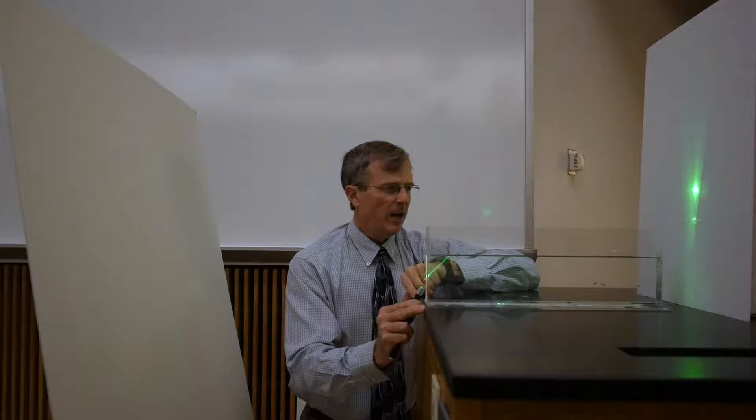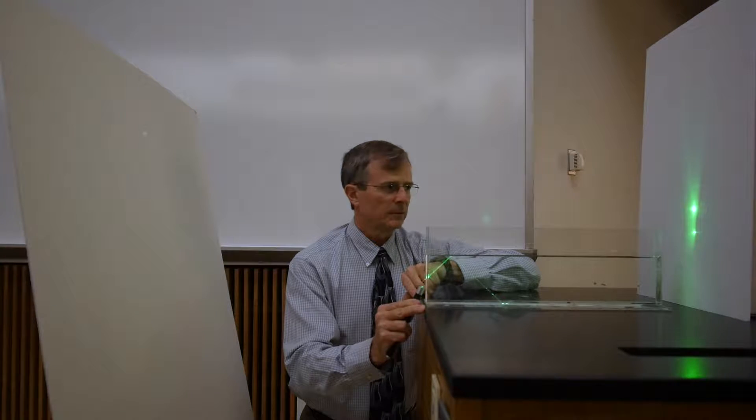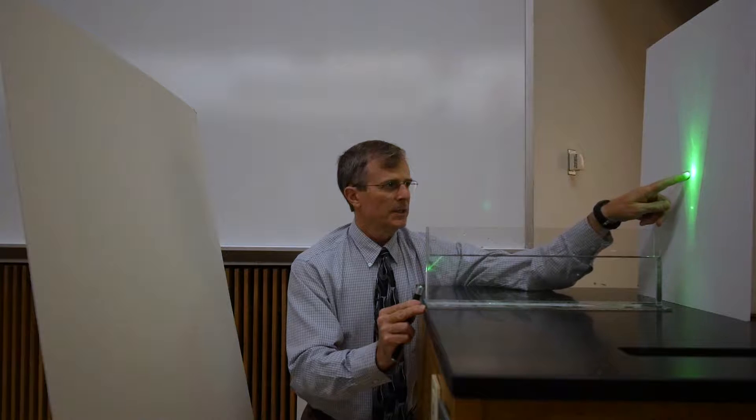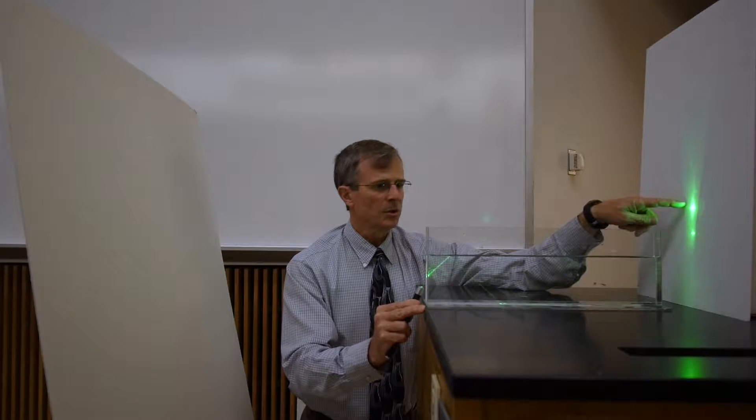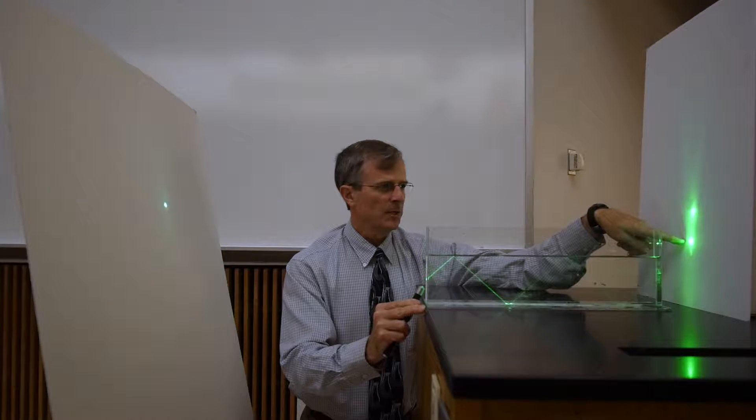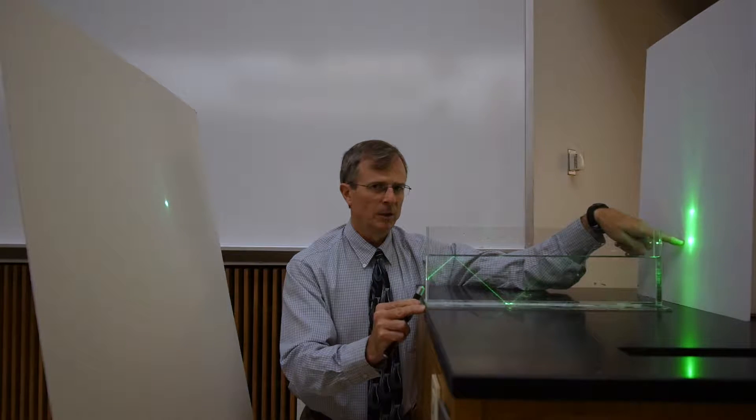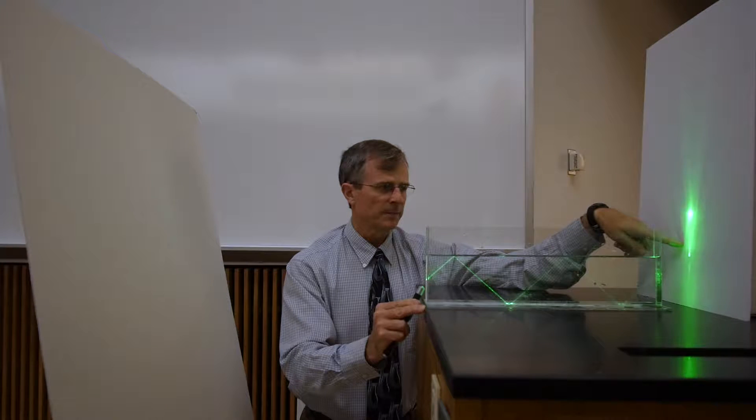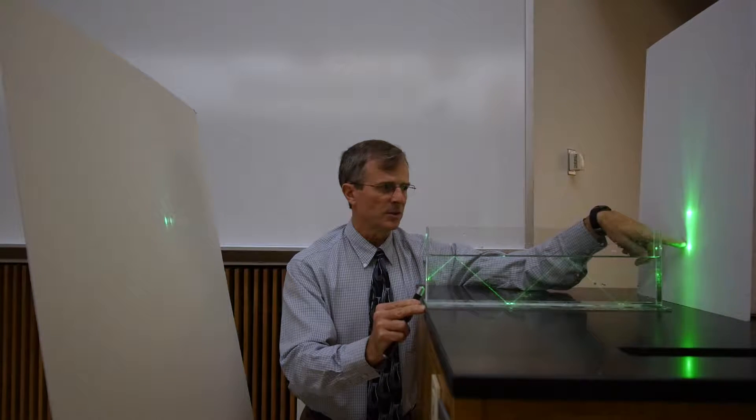Now, as I narrow the angle, lower the angle, then this refracted beam comes closer and closer to being parallel to the interface. And when I reach what's known as the critical angle for total internal reflection, that beam is horizontal.